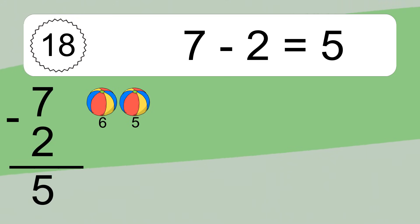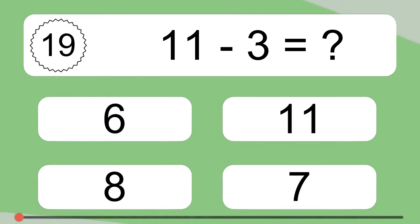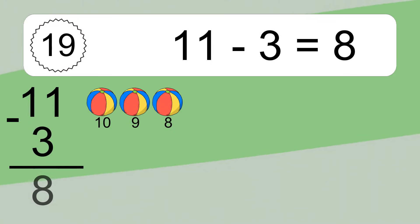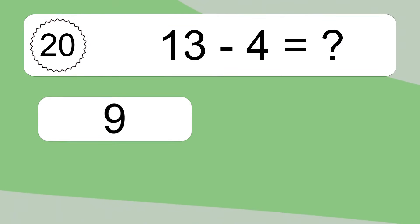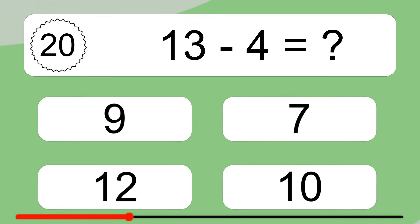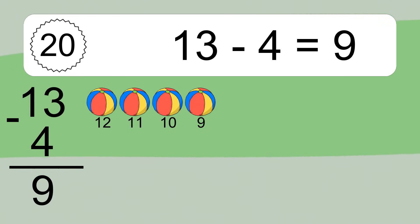7 minus 2 equals what? 7 minus 2 equals 5. Let's count it: 6, 5. 11 minus 3 equals what? 11 minus 3 equals 8. Let's count it: 10, 9, 8. 13 minus 4 equals what?